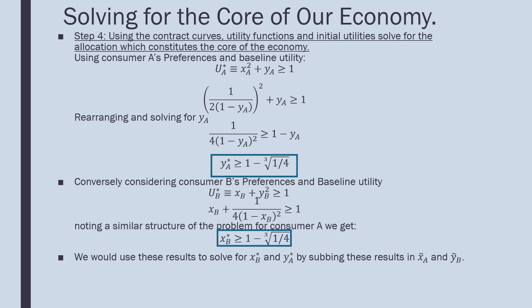Conversely, considering consumer B's preferences and baseline utility, we get the same structure. This time we plug in for Y_B because that's the contract curve we derived previously. We get X_B star must be greater than 1 minus the cube root of 1/4.